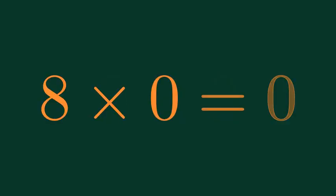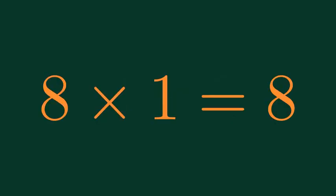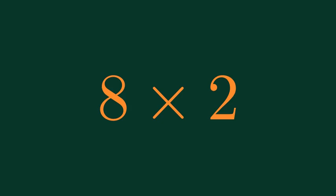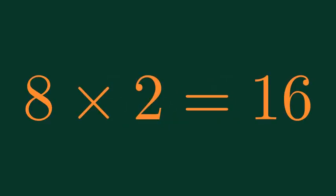What is 8 times 0? 8 times 0 is equal to 0. 8 times 0 is equal to 0. What is 8 times 0? 8 times 0 is equal to 6.